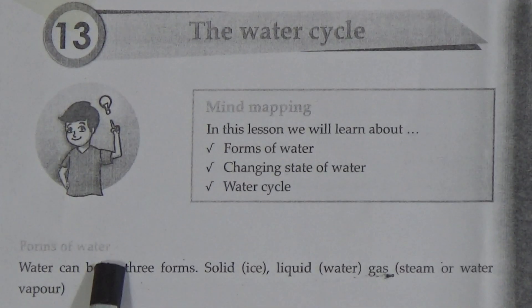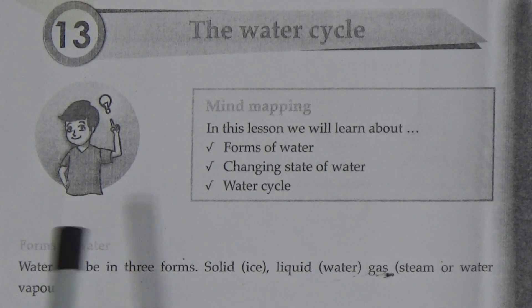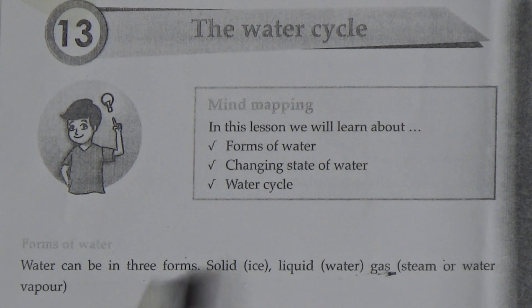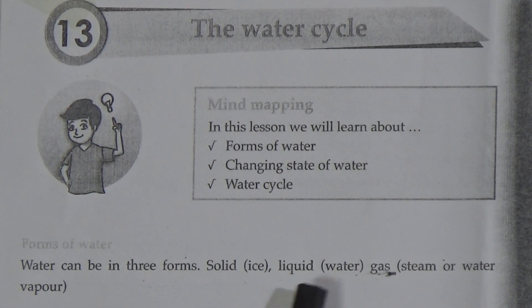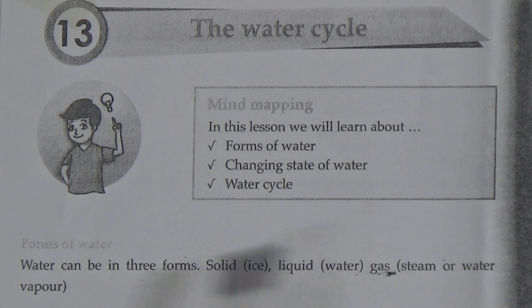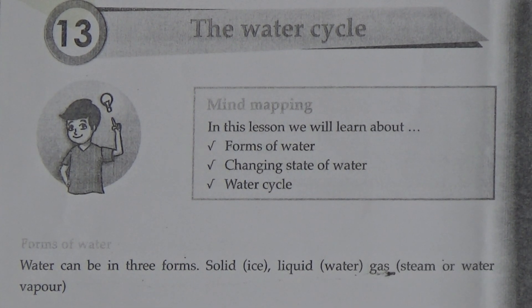Forms of water. Water can be in three forms: solid — ice, liquid — water, gas — steam or water vapor.